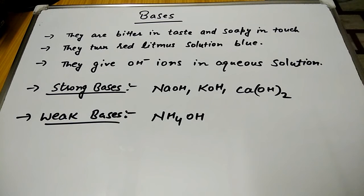The OH negative ion is what bases produce, whereas acids give H positive ions as mentioned in the earlier video.